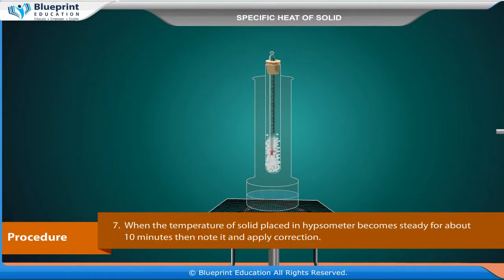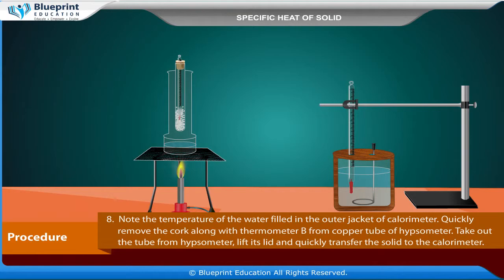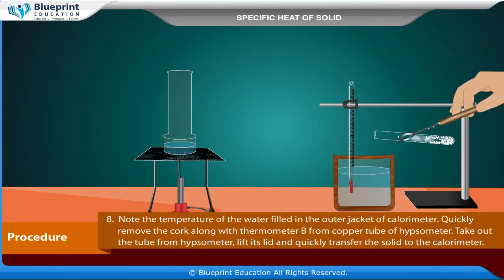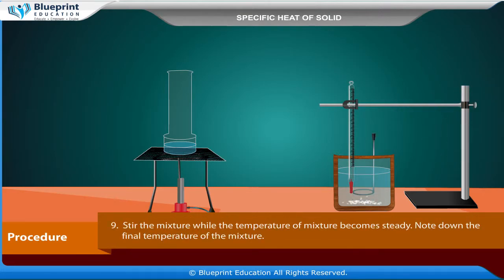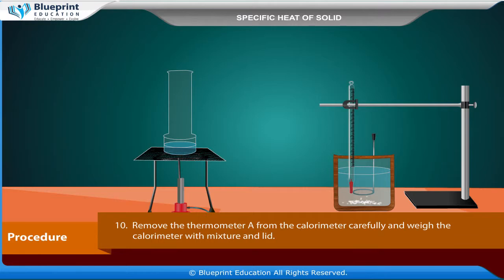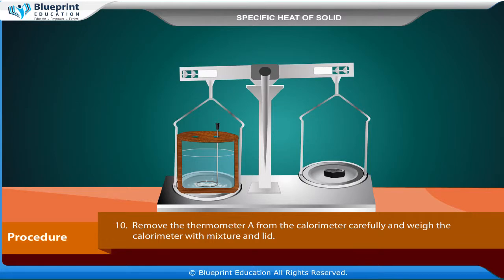When the temperature of the solid in the hypsometer becomes steady for about ten minutes, note it and apply correction. Note the temperature of the water in the outer jacket of the calorimeter. Quickly remove the cork along with thermometer B from the copper tube of the hypsometer, take out the tube, lift its lid, and quickly transfer the solid to the calorimeter. Stir the mixture until the temperature becomes steady, then note the final temperature of the mixture. Remove thermometer A from the calorimeter carefully and weigh the calorimeter with mixture and lid.